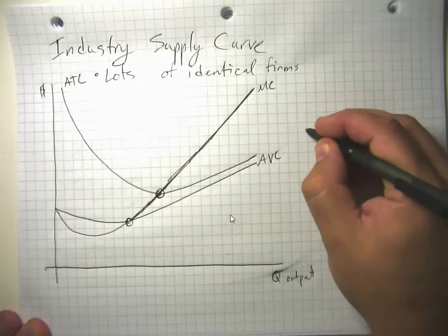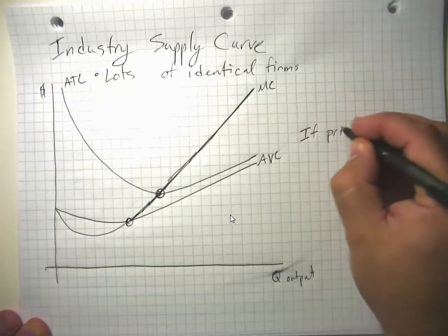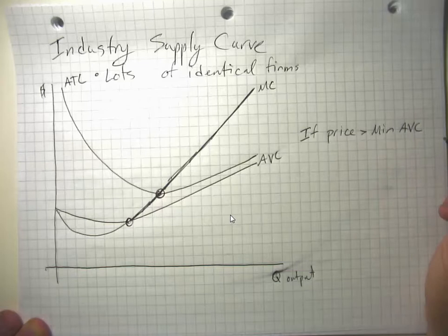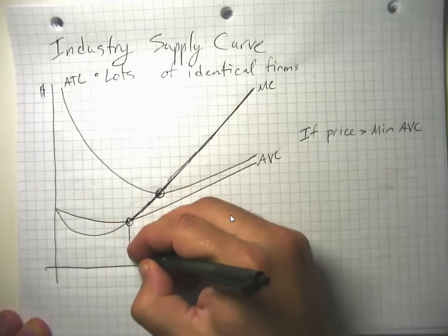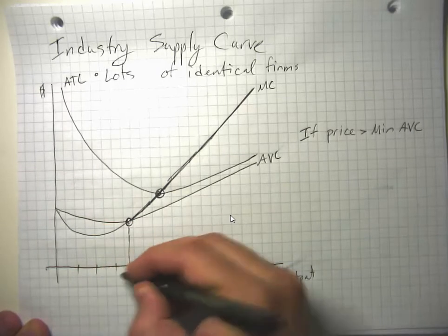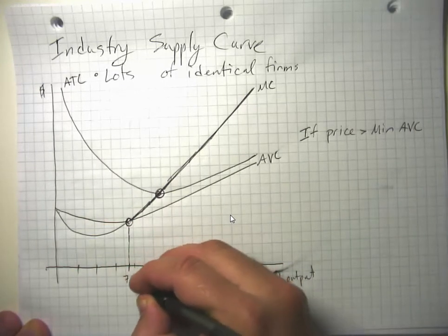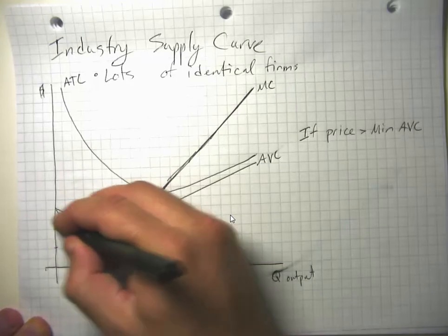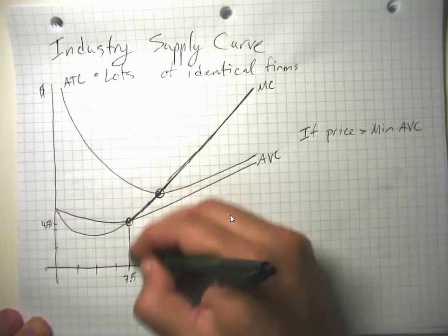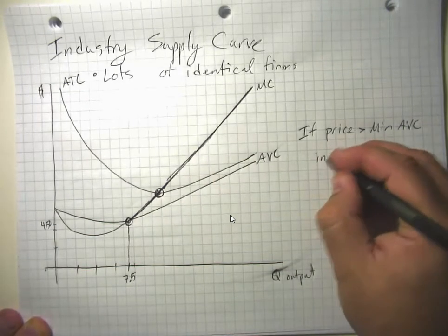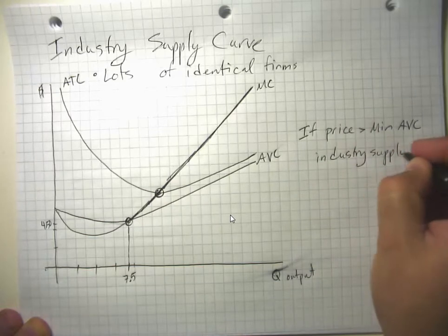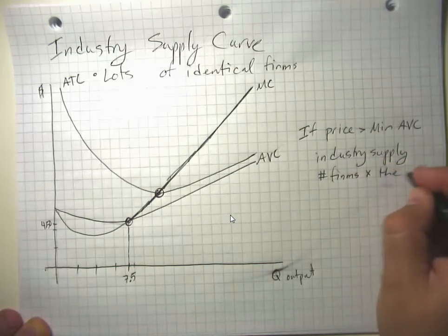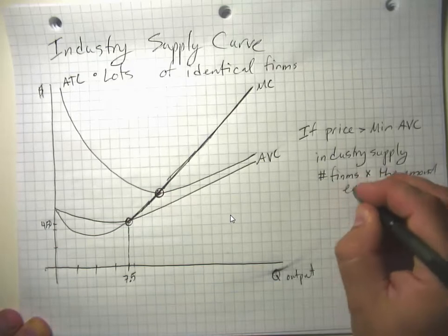So if price is greater than the minimum of the average variable cost curve, each of our firms is going to produce — in this case — 7.5 units. So if the price is here at $4.50, then each of the firms is going to produce 7.5 units. And industry supply is going to be the number of firms times the amount each firm is willing to supply.